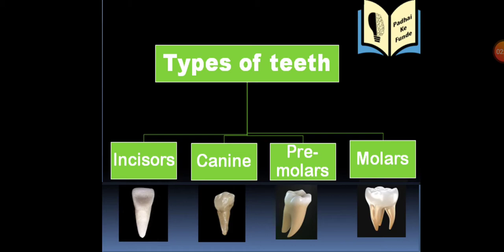The fourth type of teeth are molars. They are our biggest and strongest teeth. We have six molars in each jaw. The large surface area of molars helps to grind our food. When we eat, molars break up the food into pieces small enough for us to swallow.